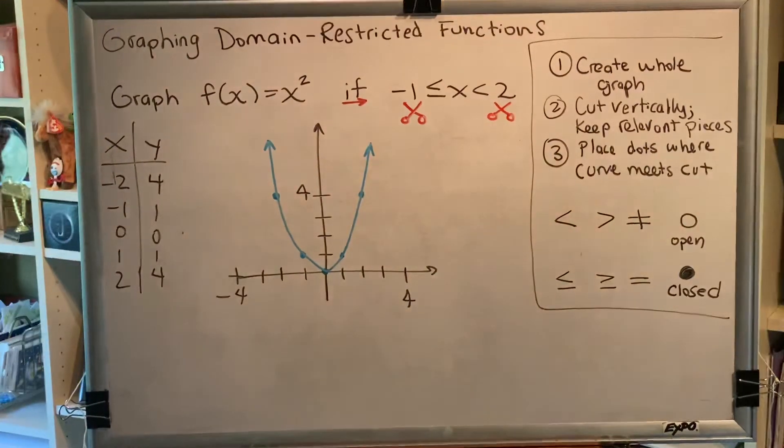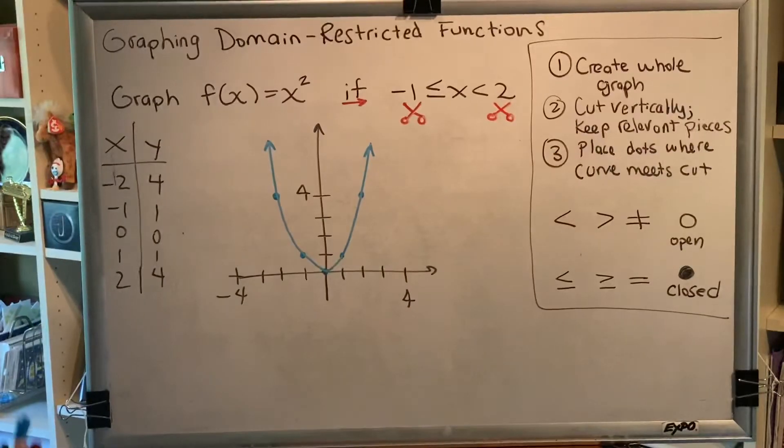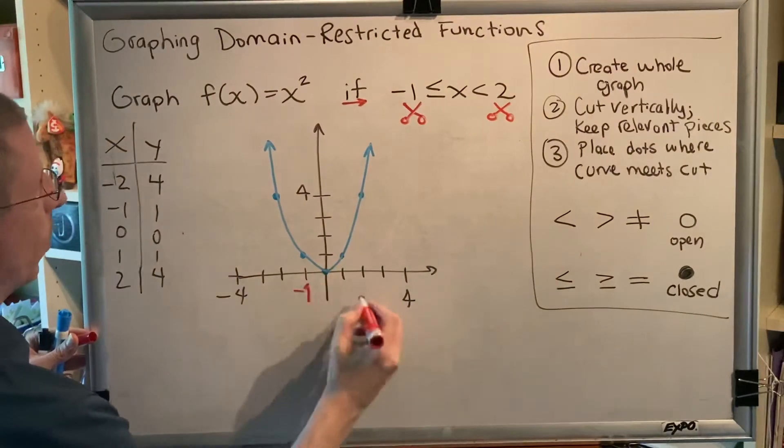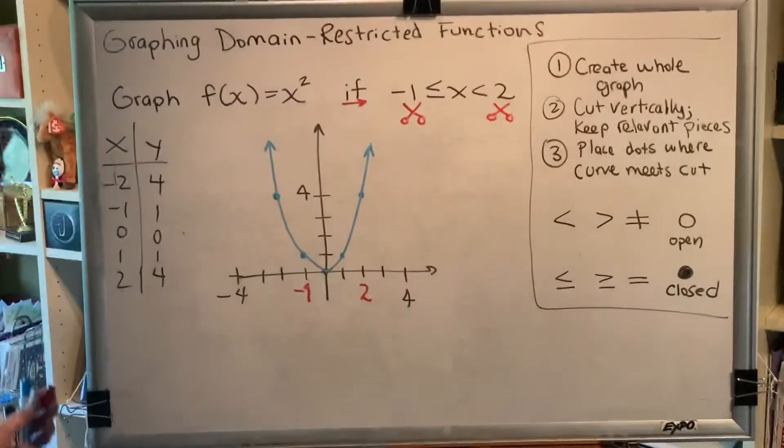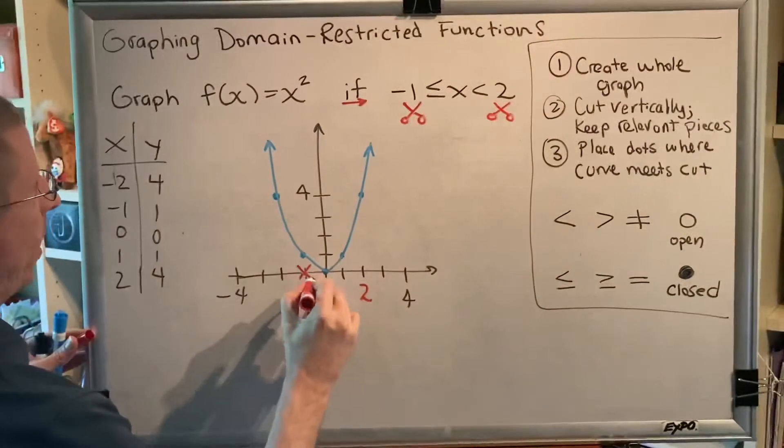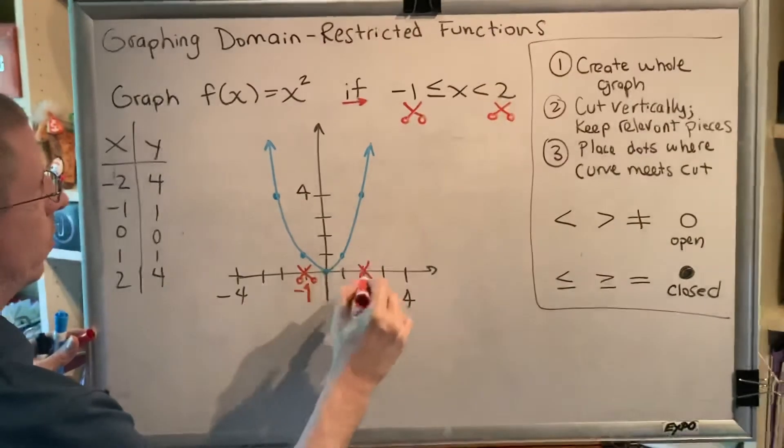In this case, that would be at negative 1 and positive 2. So we find negative 1 on the x number line and positive 2 on the x number line, and then that is where we cut with our scissors vertically.